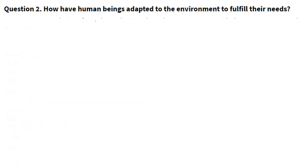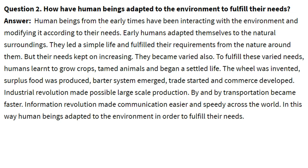How have human beings adapted to the environment to fulfill their needs? From early times, human beings have been interacting with the environment and modifying it according to their needs. Early humans adapted themselves to natural surroundings and led a simple life to fulfill their requirements from nature. But as needs kept increasing and became more varied, humans learned to grow crops, tame and domesticate animals, and began to live a settled life.